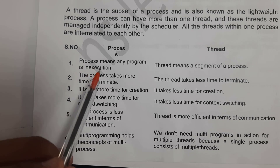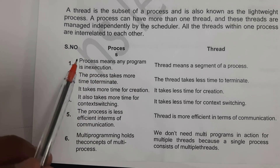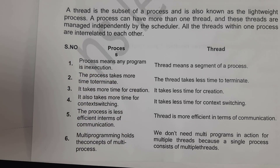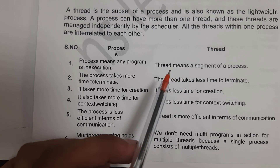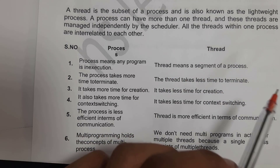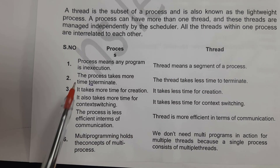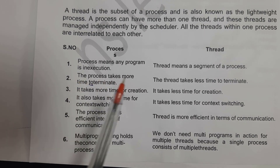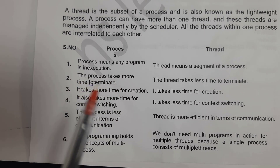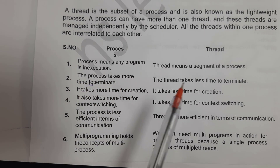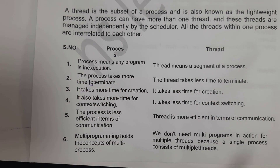Now, the difference between process and thread: Process means any program that is in execution — any program which we are executing is known as a process. Thread means a segment of a process — thread is nothing but a subprocess. The process takes more time to terminate, whereas a thread takes less time to terminate.